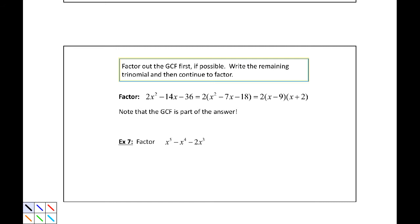So factor 2x² - 14x - 36. Well, that's going to be equal to 2 multiplied by, in parenthesis, x² - 7x - 18, because 2 is the greatest common factor.